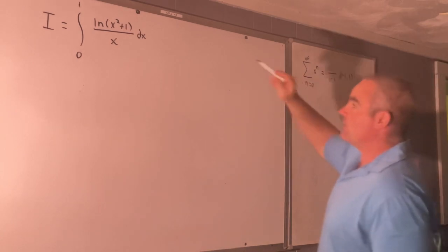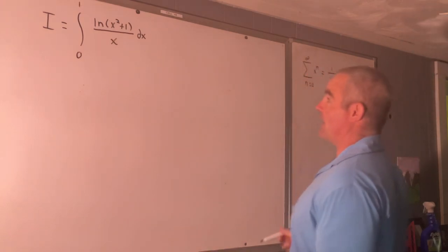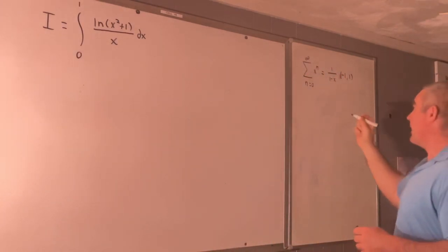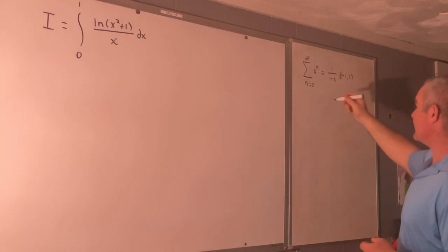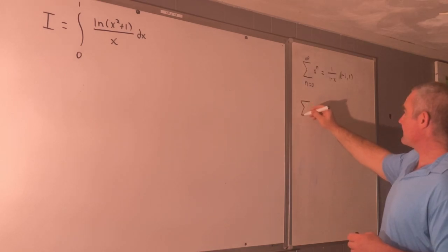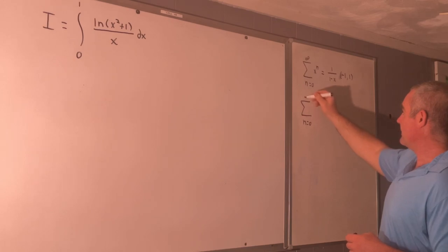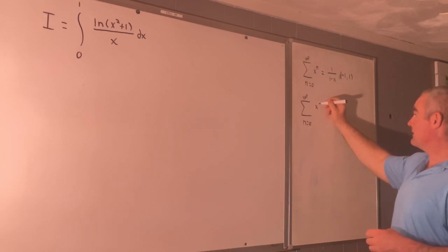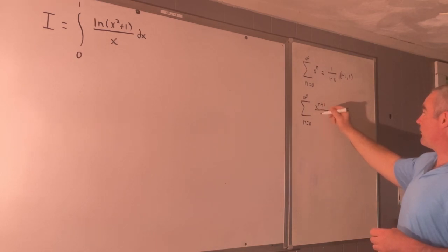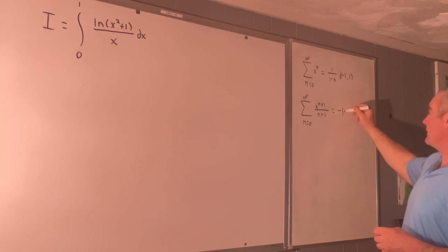What we're going to try to do is develop a Taylor series representation for natural log x squared plus 1 over x. So starting from here what we can do is integrate this term by term. So that means that the sum as n goes from 0 to infinity of x to the n plus 1 over n plus 1 should be equal to negative natural log of 1 minus x. And that should also be good on negative 1 to 1.